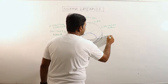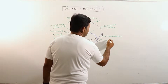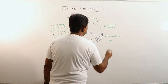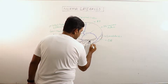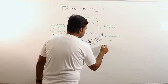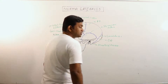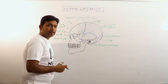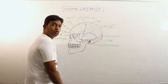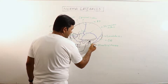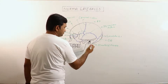This is the lambdoid suture and this is the occipital bone. Now in the lateral part of the skull we can observe this process — this is the mastoid process. Mastoid process is a nipple-like large projection which develops from the lower part of the temporal bone. It projects downwards, anteriorly, and medially.